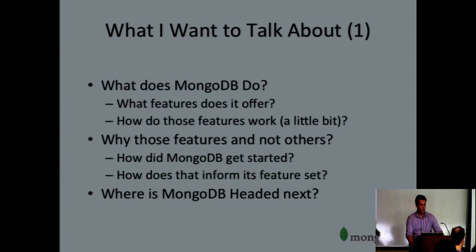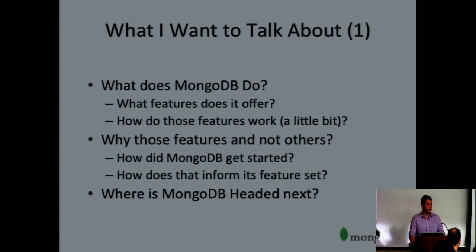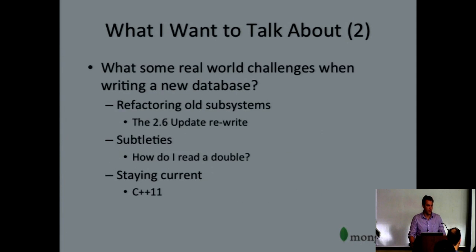So there are a couple of things I want to talk about. I want to give an overview of MongoDB in general. It would be interesting to see how many people have used MongoDB — fair number of hands. How many liked it — fair number of hands. Anybody actively dislike it — no hands. I also want to discuss among those features, why those features and not others, and part of the way to understand that is to look at where MongoDB came from and how its origin informed the feature set it has. And finally, I want to talk briefly about where it's headed next.